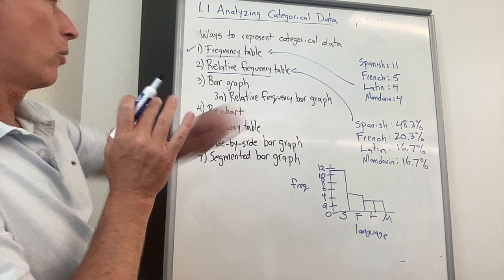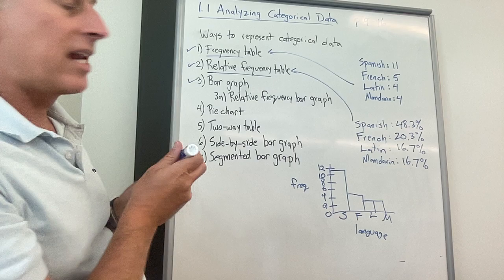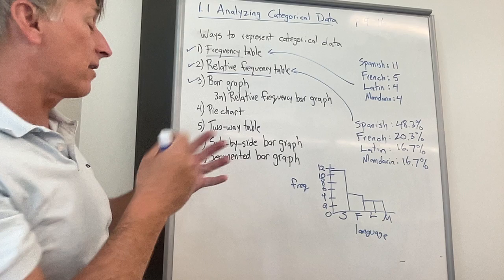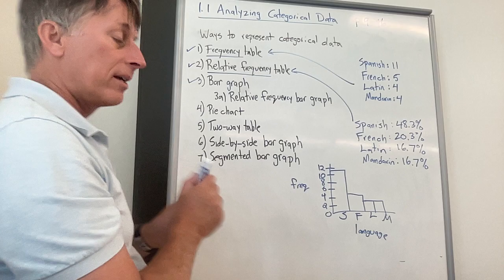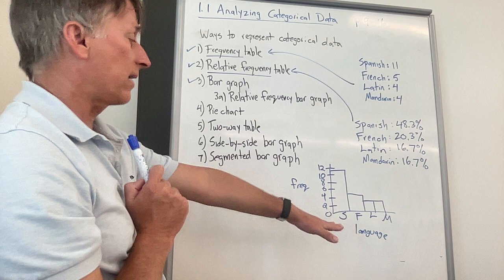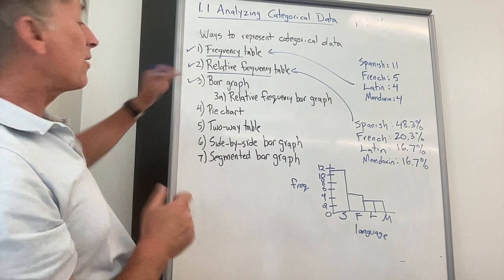Again, the order of those bars really doesn't matter. A bar graph is just a way to represent a frequency table. It does give us a little bit of the distribution, because, oh look, the Spanish bar is the tallest. It's somewhat interesting. And the French, Latin, and Mandarin bars are all roughly the same. So that's a bar graph. Again, the order of those bars couldn't matter. Another important thing, make sure you always give a label to the x and y axis. X axis in this case is language. Y axis is frequency, but it could also just be number of people.